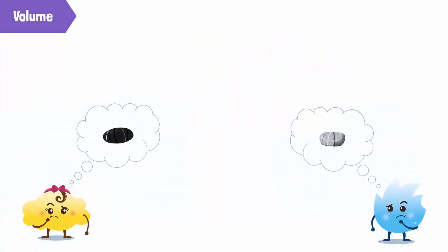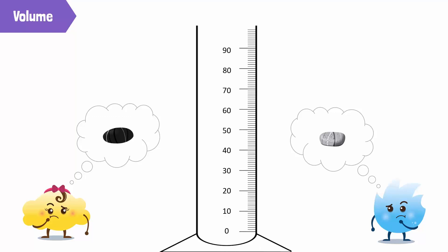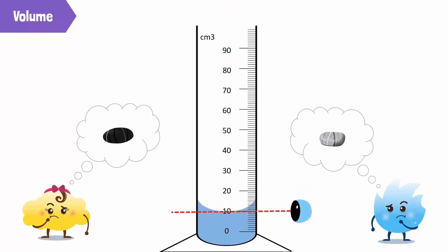We can measure the volume of an object or a liquid with a measuring cylinder — a tube filled with a liquid. Usually a measuring cylinder is measured in cubic centimeters. To measure with the measuring cylinder, first we pour water into it. Then we make sure that our eye is level with the bottom of the surface of the liquid in the cylinder. This is called the meniscus.